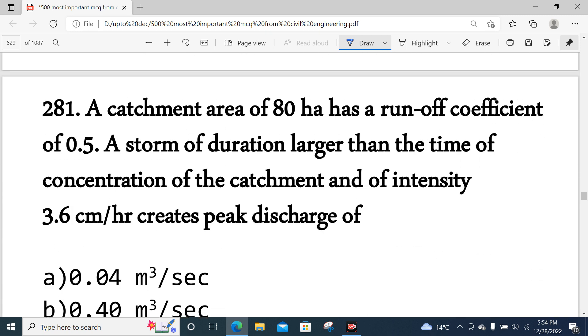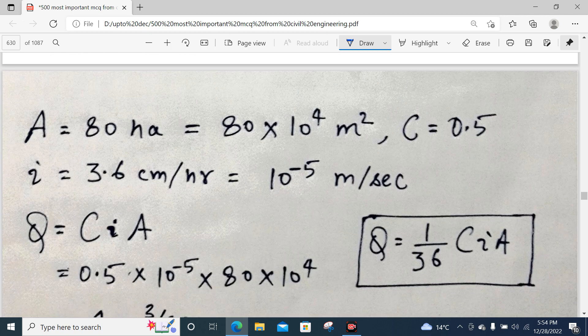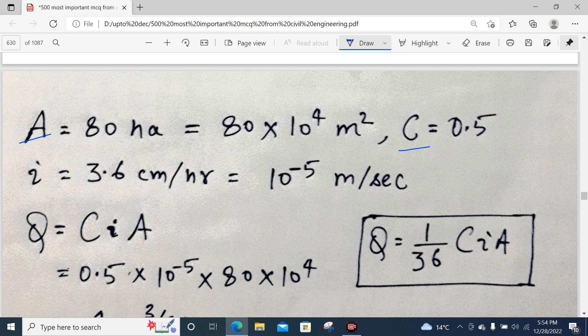Question number 281 is a numerical question. Catchment area is 80 hectares, runoff coefficient is 0.5, a storm of duration larger than the time of concentration of the catchment and of intensity 3.6 cm per hour. We have to find the peak discharge. We have to use formula Q = C × I × A.